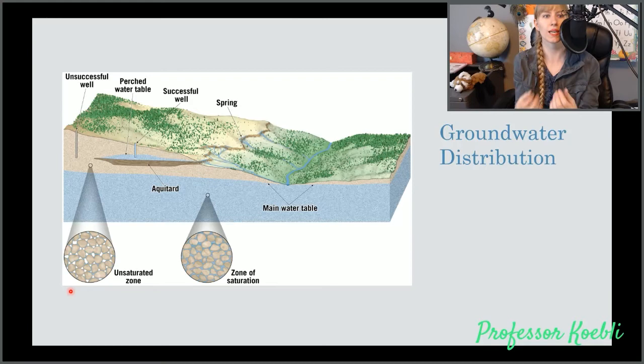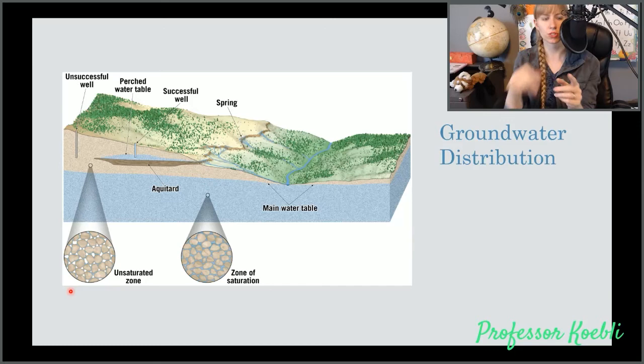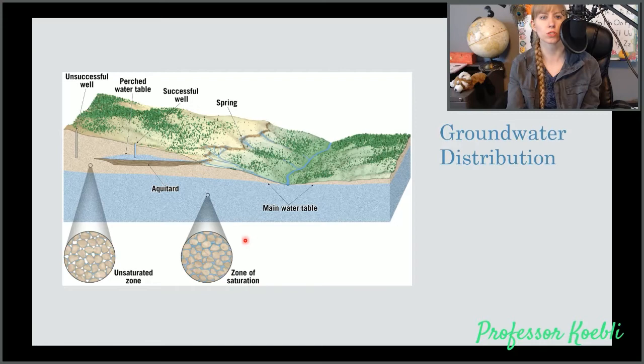That's how groundwater tends to work. When you're in the unsaturated zone, you're not having all the pore space filled. Instead, you're just going to have water wrapped around each individual stone. When you're in the zone of saturation, which is where we have our main water table, you're going to have the pore space completely filled with water.